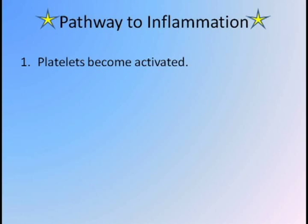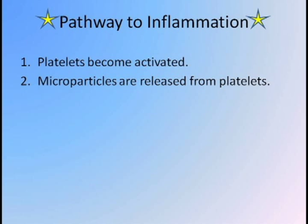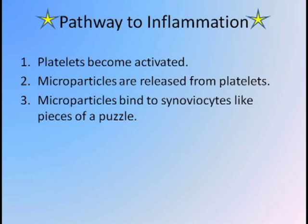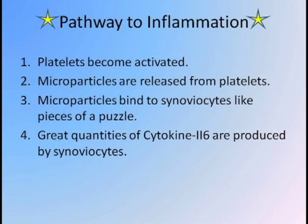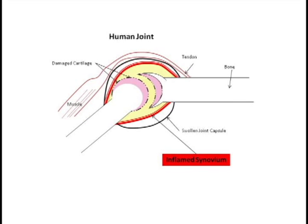To recap, the process by which platelets are shown to cause inflammation can be broken down into four simple steps. Step 1: platelets become activated. Step 2: microparticles are released from platelets. Step 3: microparticles bind to synoviocytes like pieces of a puzzle. And Step 4: great quantities of cytokine 2-6 are produced by synoviocytes, which then goes on to cause inflammation in the synovium.